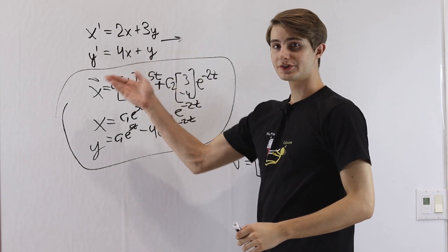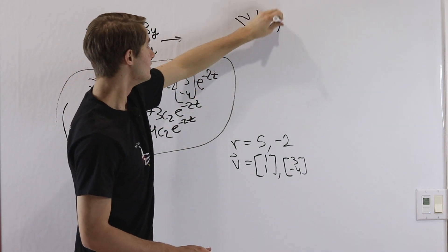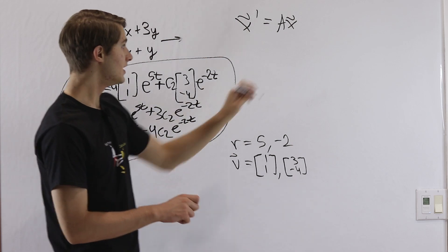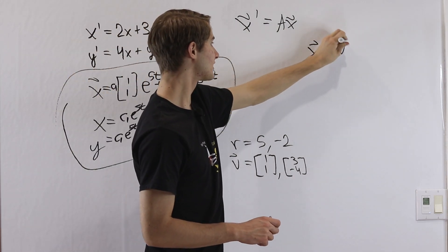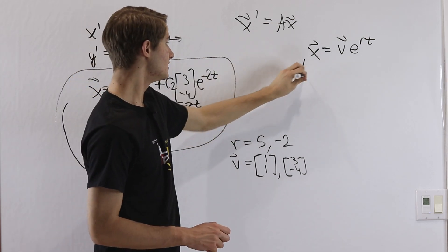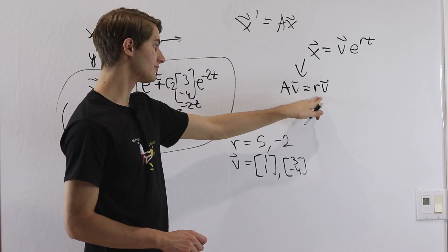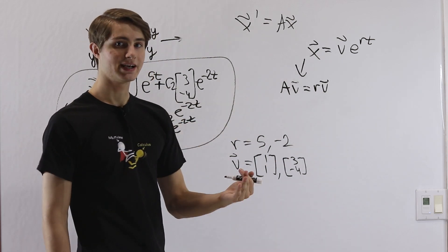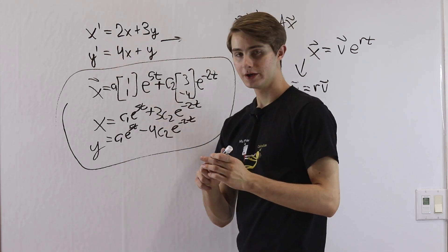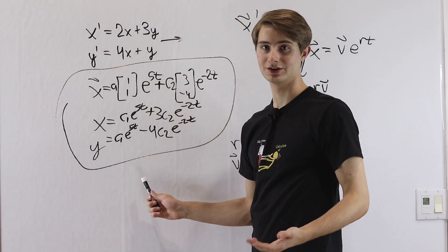So in order to solve this system of differential equations, we turned it into one equation involving vectors and matrices like this. Then when we guessed x equals some vector v times e to the rt, that led us to the equation av equals rv, which means to solve for r and v, we find the eigenvalues and the eigenvectors of this matrix 2, 3, 4, 1. We plug those in, split them up, and that is how we solve these equations.